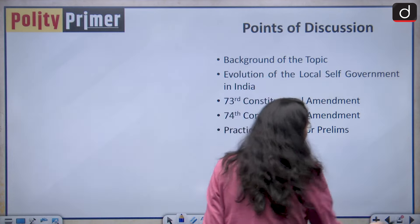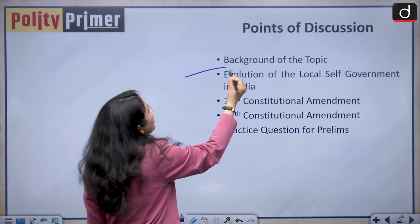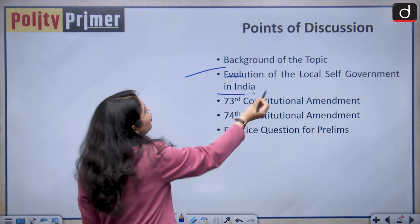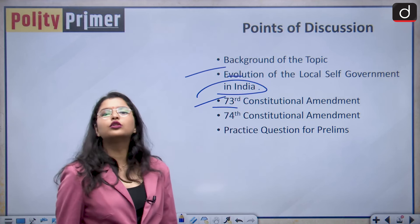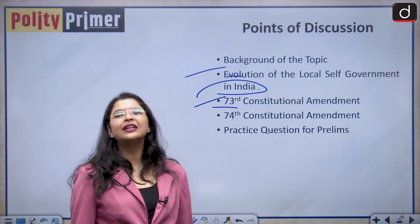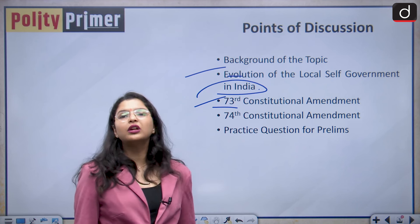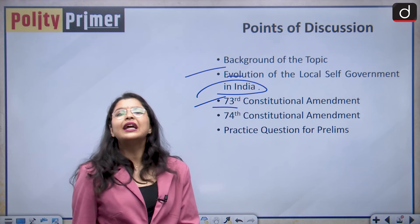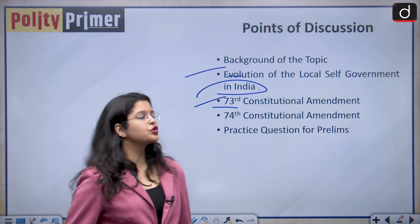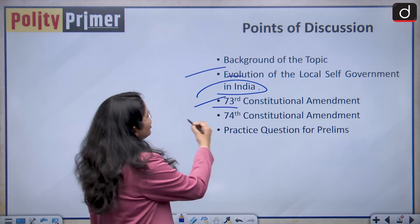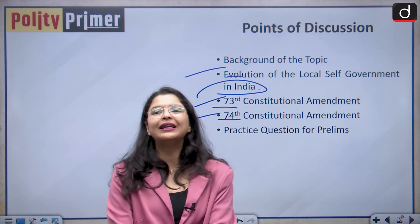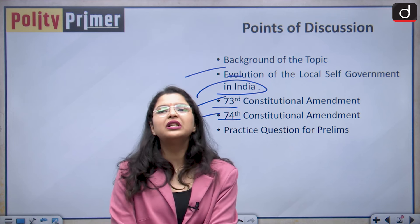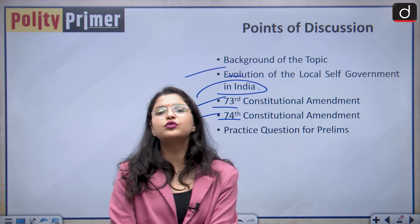In this discussion, we are firstly going to study about the evolution of local self-government in India. Then we are going to talk about the 73rd constitutional amendment act and its salient features or the constitutional changes it brought in our Indian constitution. Then we are also going to talk about the 74th constitutional amendment act. And lastly, we are going to discuss some important questions from the perspective of your prelims examination.